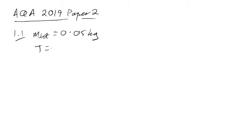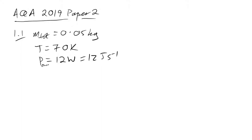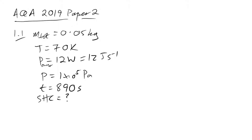Temperature is 70 Kelvin, so we don't need to convert that — it's already in Kelvin. We have a power of 12 watts; don't forget that's 12 joules per second, which might be useful to think about later. We have pressure P at 1×10⁵ pascals, a time of 890 seconds, and we've been asked to find the SHC. We're given the SLH and the boiling point as well — lots of data here.